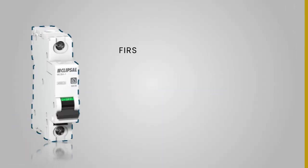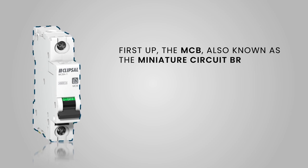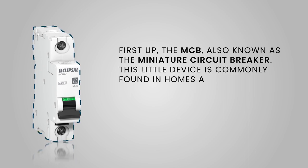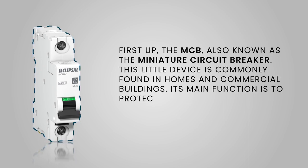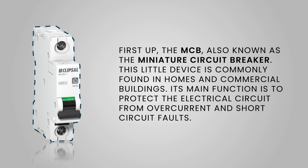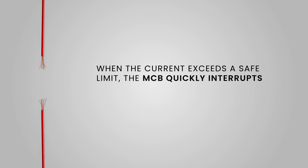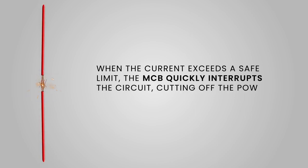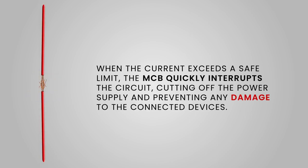First up, the MCB, also known as the miniature circuit breaker. This little device is commonly found in homes and commercial buildings. Its main function is to protect the electrical circuit from overcurrent and short circuit faults. When the current exceeds a safe limit, the MCB quickly interrupts the circuit, cutting off the power supply and preventing any damage to the connected devices.